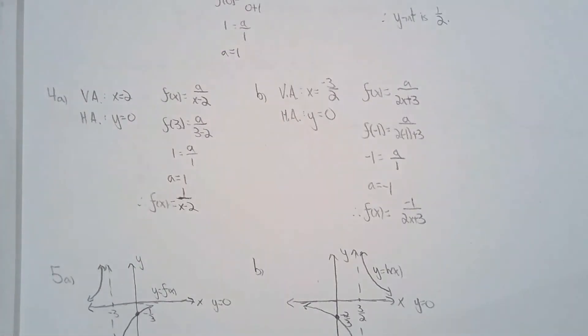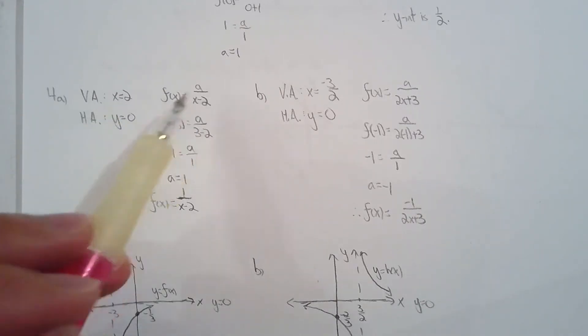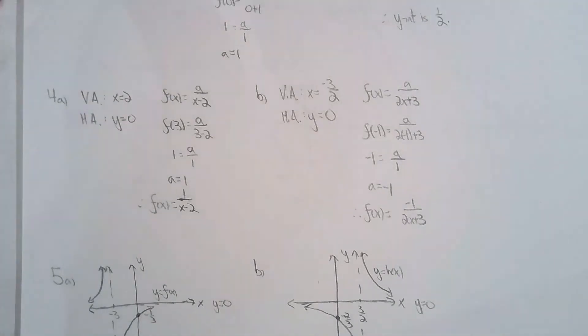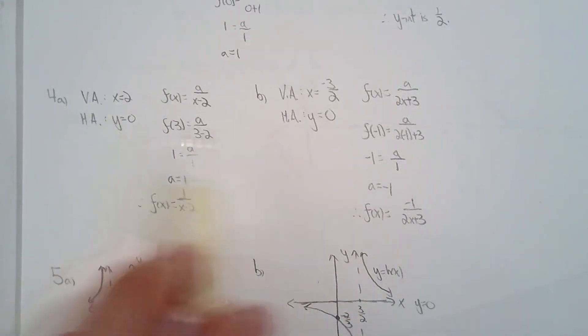For question four, they gave us the graphs and they asked us to find the equation. So I first found the asymptotes, and if I have the vertical asymptote, I can generate the factor in the denominator and I can solve for the numerator by subbing in a point. So that's basically the same strategy for 4a and 4b. I actually did not need the horizontal asymptote for 4, but I wrote it in anyways. I think it's just out of habit.